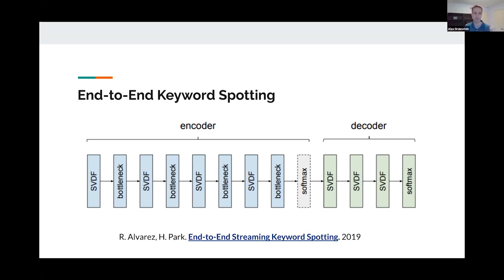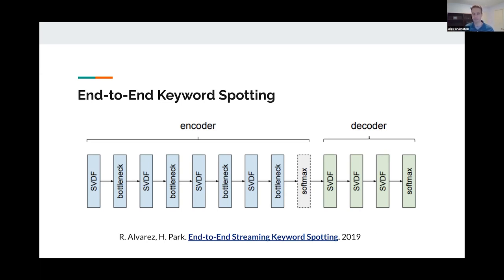Getting back to latency — one thing we struggled with in this encoder-decoder approach is it's tricky to train a neural net and tell it 'I need you to fire really early.' It may learn to delay that decision because that actually gives it better accuracy. So you have to be very careful about how you label the training data and make sure you're penalizing it if it's firing late.